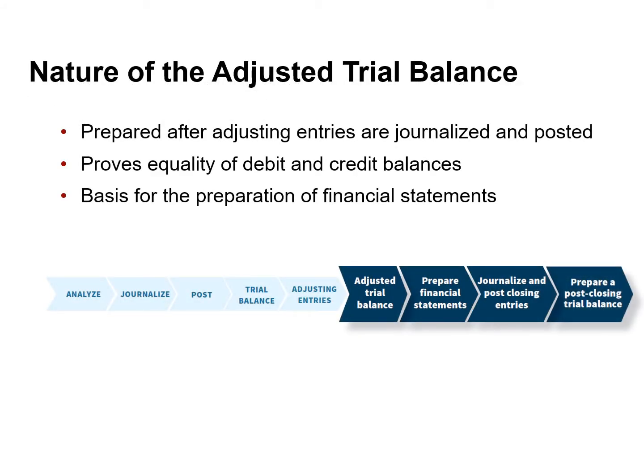After a company has journalized and posted all adjusting entries, it prepares another trial balance called an adjusted trial balance, which shows the balances of all accounts, including those adjusted, at the end of the accounting period. The purpose of an adjusted trial balance is to prove that the total debits equal the total credits.